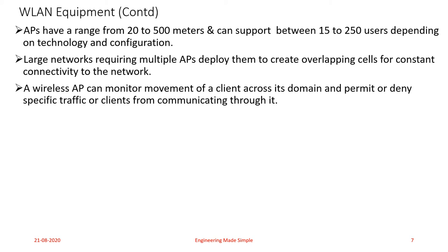A wireless access point can monitor the movement of clients across its domain and can allow or deny specific traffic or clients when communicating through it. For example, with your home Wi-Fi router, a person who has the Wi-Fi password can access the network through the access point, but if you don't have the password you cannot connect. So the wireless AP can monitor the movement of a client across its coverage radius and can permit or deny specific traffic or data transfer through it.